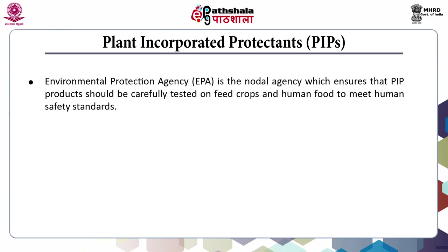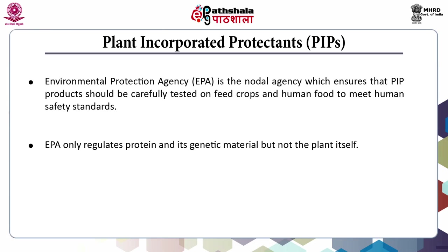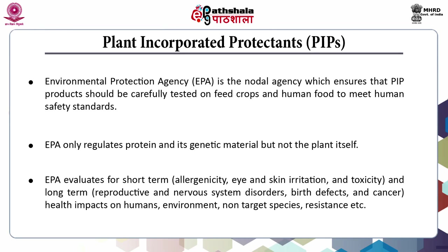The Environmental Protection Agency (EPA) is the nodal agency which ensures that PIP products should be carefully tested on feed crops and human food to meet human safety standards. EPA only regulates the protein and its genetic material but not the plant itself. EPA evaluates for short-term effects such as allergenicity, eye and skin irritation, and toxicity; and long-term effects including reproductive and nervous system disorders, birth defects and cancer; as well as health impacts on humans, environment, non-target species and resistance.